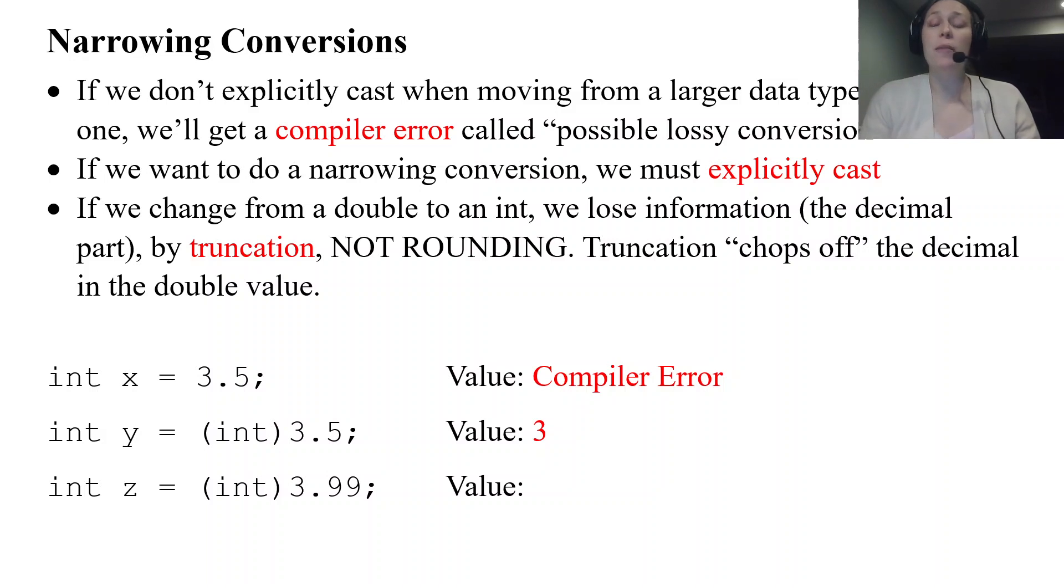And it's not rounding. So no matter what your decimal is, it will always chop it off. So that last one there, int z, Z is going to get the value of 3. The decimal gets chopped off. Explicitly cast.